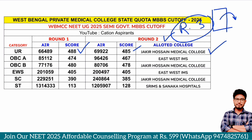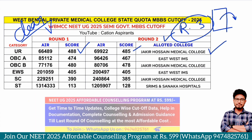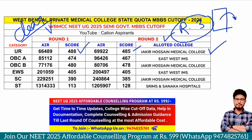The West Bengal Medical Counseling Committee, WBMCC, will publish clear vacancy data. This virtual vacancy data will show which colleges have available seats. This data will also be published by the All-India Quota Counseling MCC. For West Bengal State Quota Counseling under WBMCC, the virtual vacancy data will also be published. Using this, you can determine which colleges will be available to you. In this category, Round 1 cut-off is 474 marks and Round 2 cut-off is 467 marks.